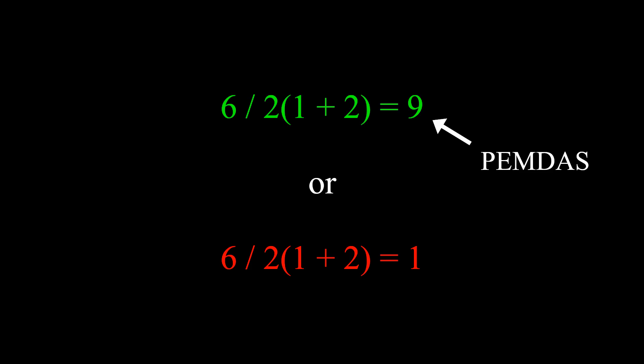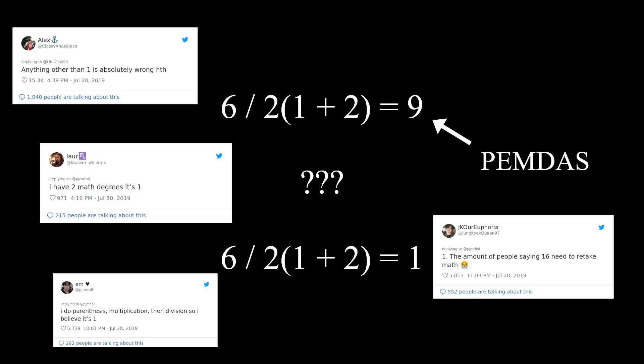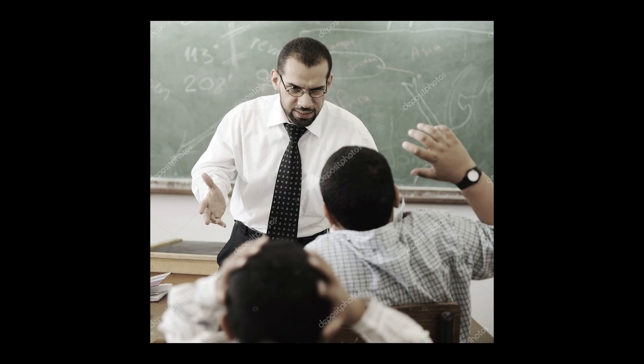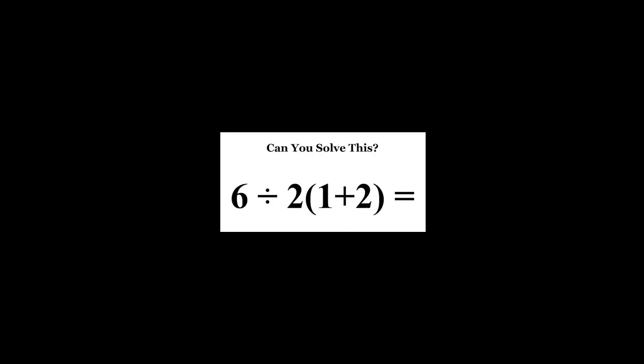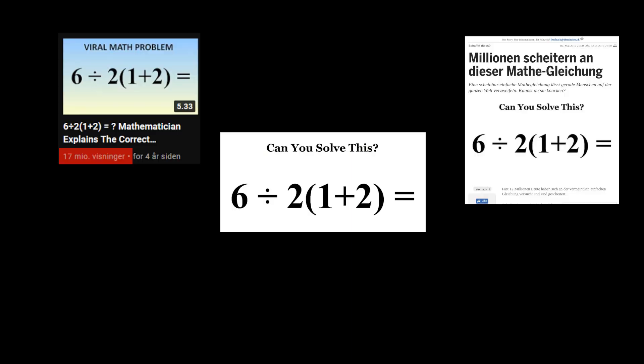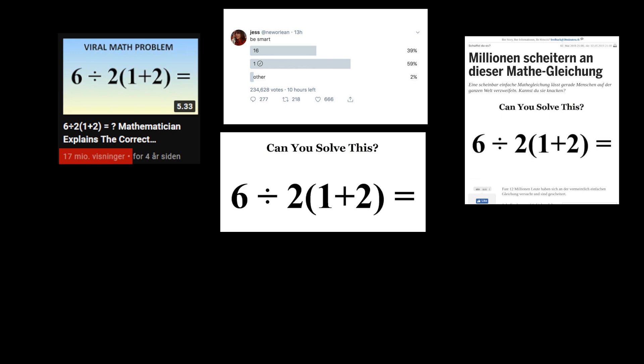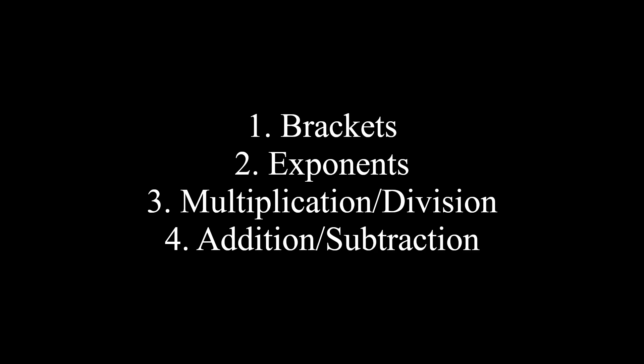One question you need to ask yourself is, if the rules are so straightforward, why is there so much disagreement on the topic? Is it just misunderstanding? Have people been taught incorrectly? Sure, for some, but when Facebook math problems can make headlines, gain millions of views, and spark internet-wide flame wars, I think it's reasonable to assume there's something deeper going on. Or perhaps the simpler answer is that these rules are nearly as straightforward as you think.